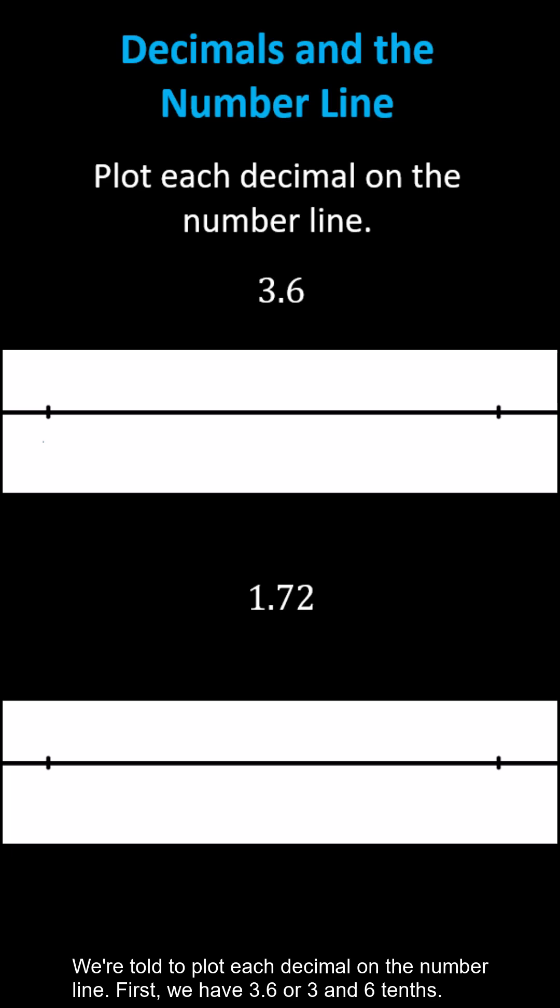We're told to plot each decimal on the number line. First we have 3.6 or 3 and 6 tenths. To begin, notice 3 and 6 tenths is between 3.0 and 4.0.